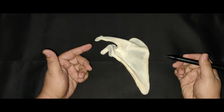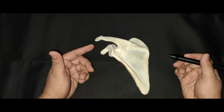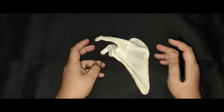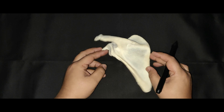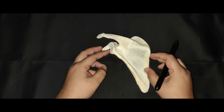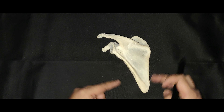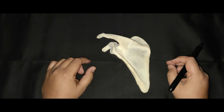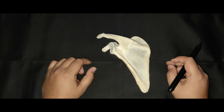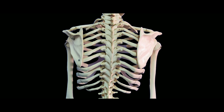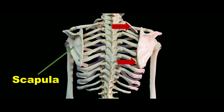The scapula or the shoulder blade is a large, flattened and triangular bone located on the upper part of the posterolateral aspect of the thorax, against the second to seventh ribs.